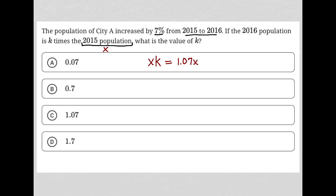Again, just 100% of the population in 2015 increased by 7%. So that was 107% of what it was in 2015. The decimal form of 107% is 1.07. That's where that all came from. The question goes on to say, what is the value of K?